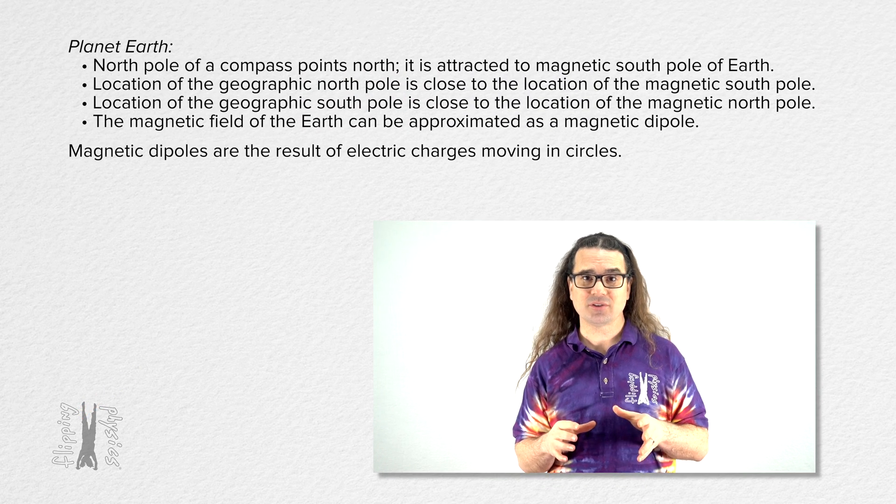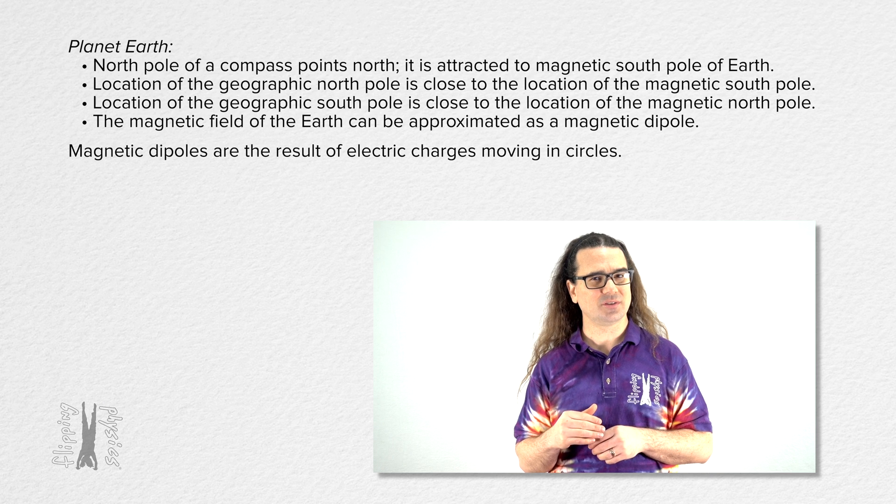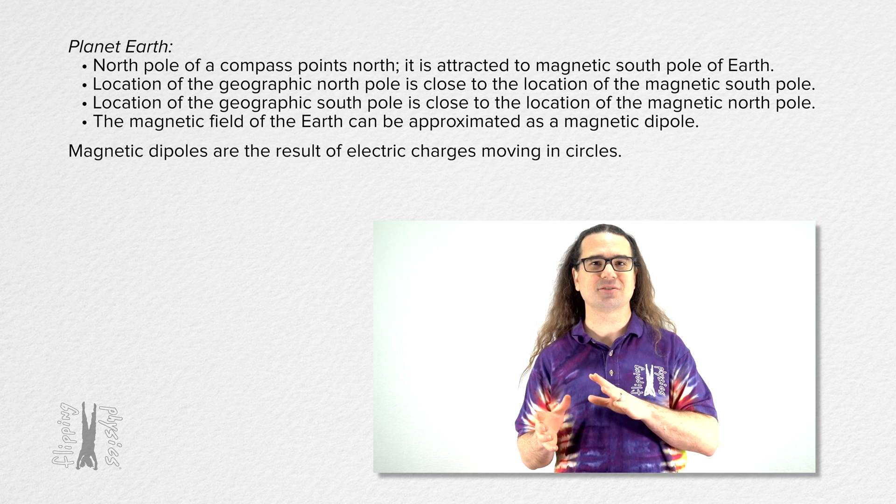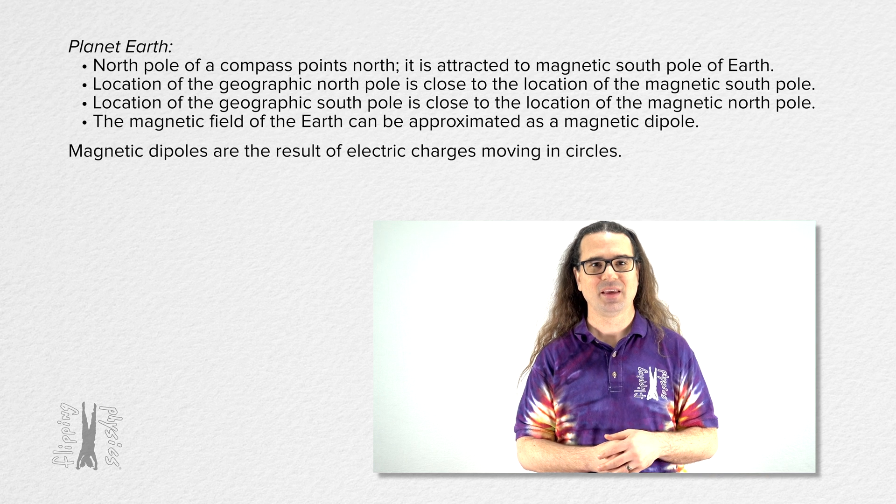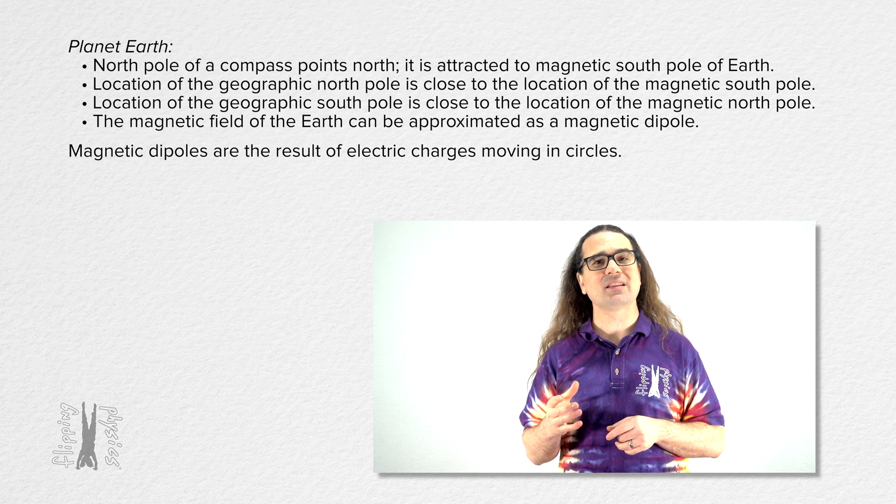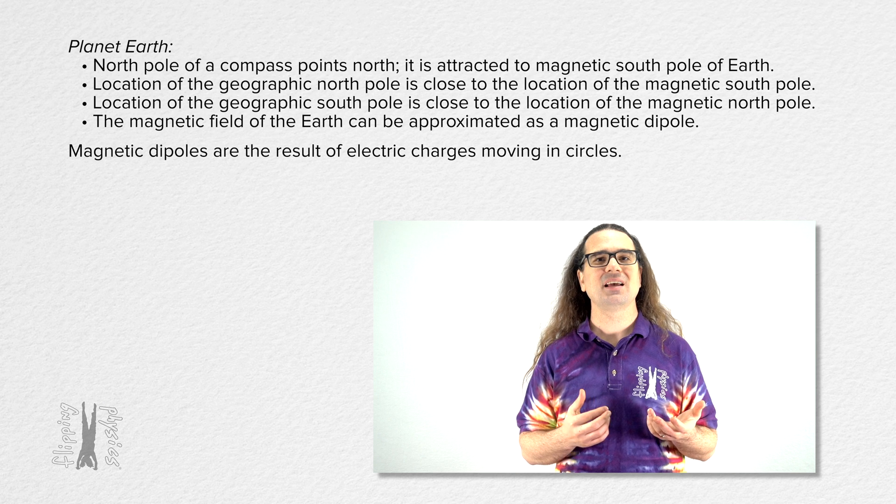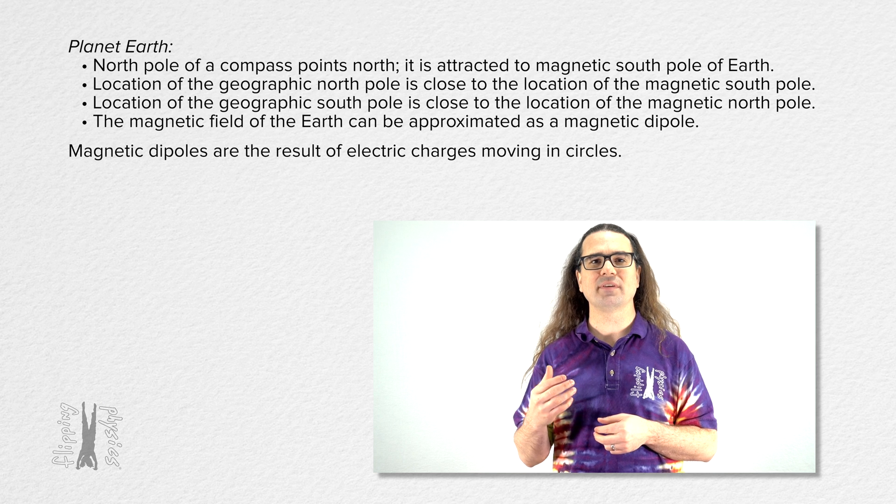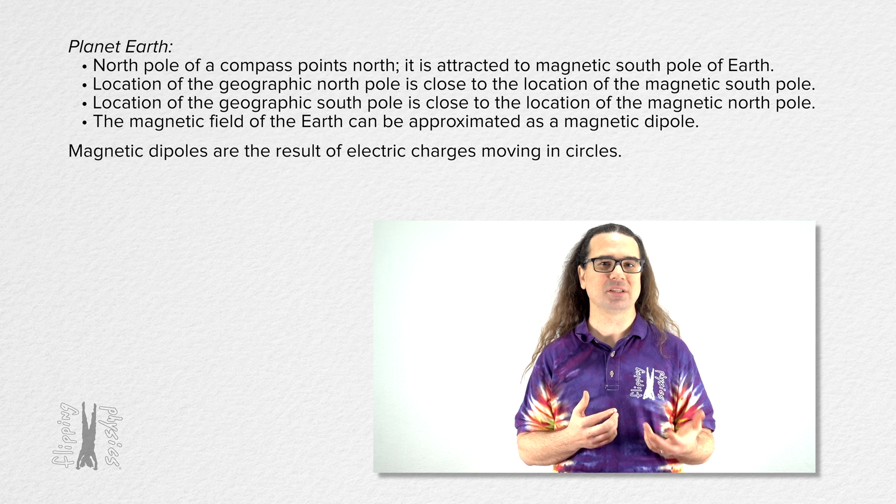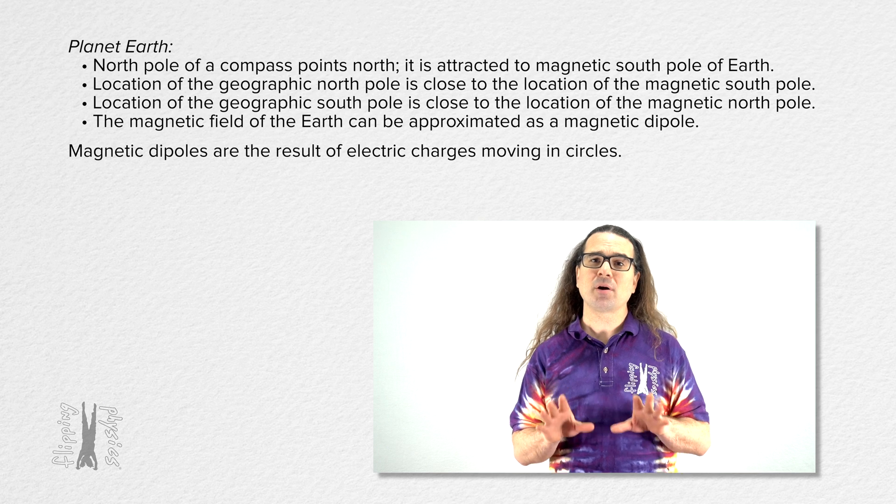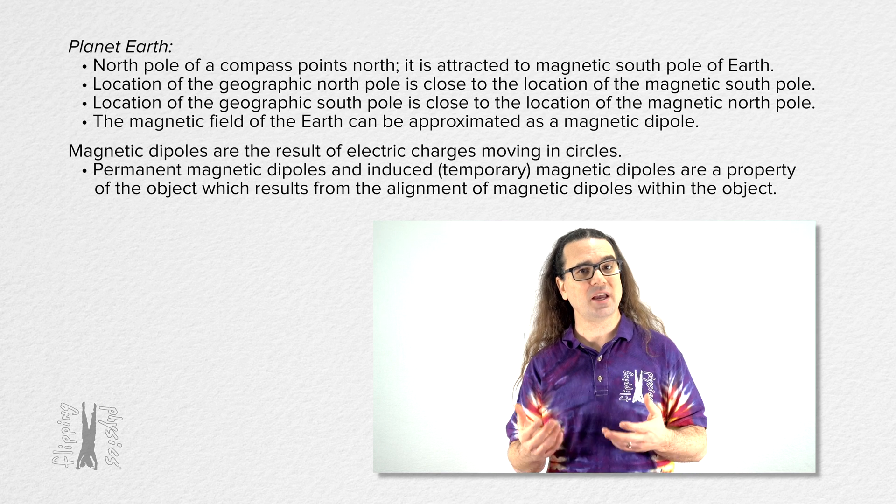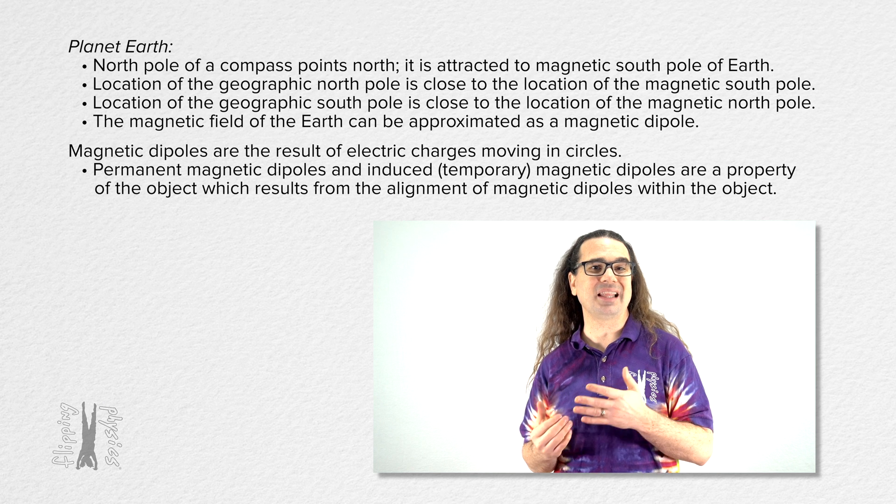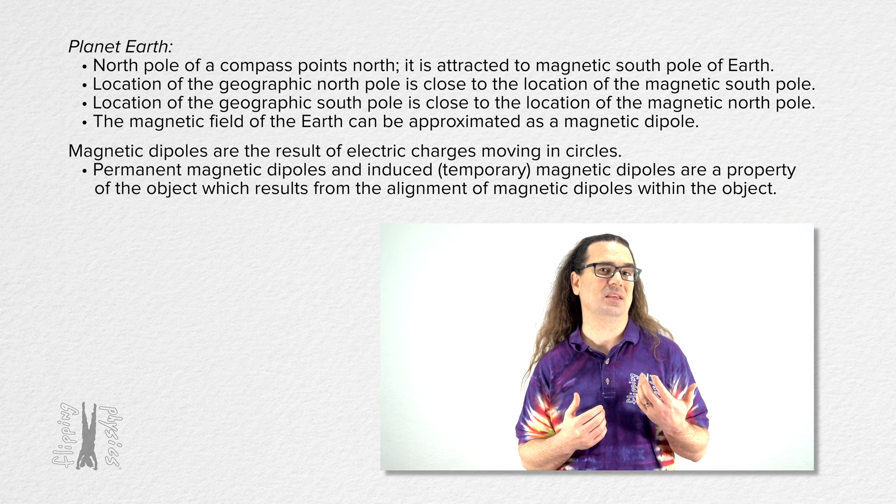Magnetic dipoles are the result of electric charges moving in circles. We will cover electric charges moving in circles creating magnetic fields extensively later. At this point, just know that electric charges moving in circles create magnetic fields and that the magnetism of magnets is most often the motion of electrons moving in circles inside the magnetic materials. Permanent magnetic dipoles and induced or temporary magnetic dipoles are a property of the object which results from the alignment of magnetic dipoles within the object.